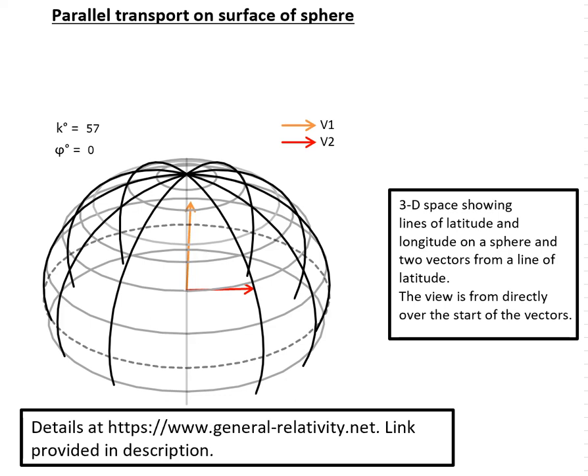And so I wanted to try parallel transporting a vector, I've got two vectors actually, around the line of latitude which is 33 degrees north from the equator, which is 57 degrees from the pole.